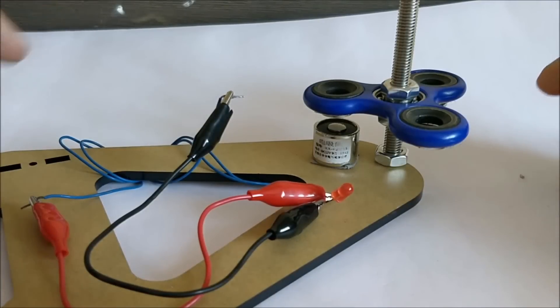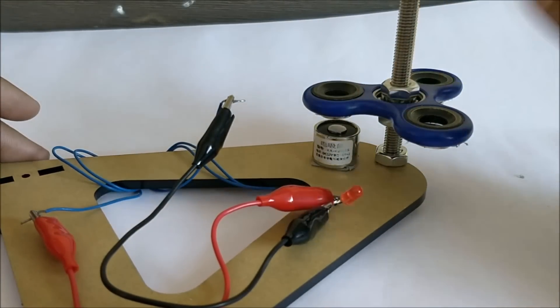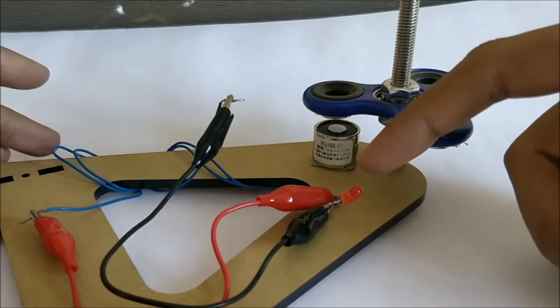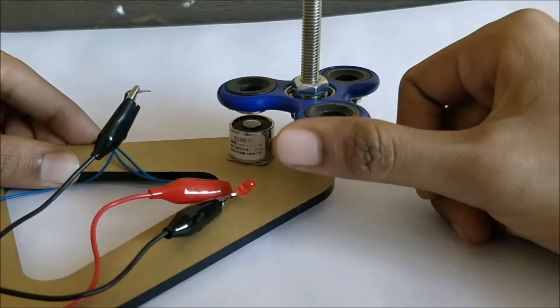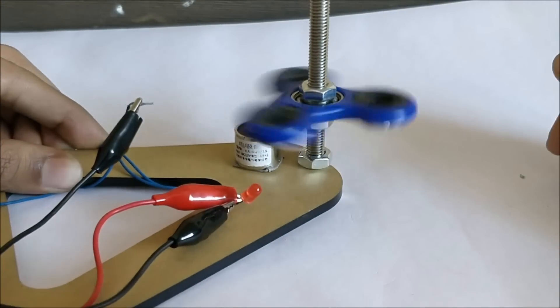That will induce a current through the coil of this electromagnet which will help us to glow this LED. So let me go ahead and rotate this. As you can see, as we rotate the fidget spinner, the LED glows.